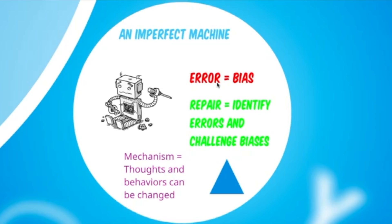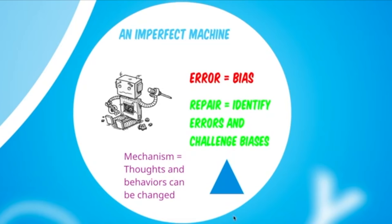The problem is our brain is a problem-solving computer and we want to take in information and process it most accurately so we can respond most effectively - in our case, responding to the crypto environment. The way we do that: identify these errors and challenge the biases based on observable data. This is based on cognitive behavioral theory - we are in charge of our thoughts and behavior. It starts with identifying and then challenging.